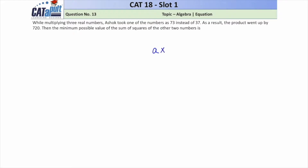We'll start by taking the two unknown numbers as a and b. The third number is given as 37, so the original product is a × b × 37. Instead of 37, Ashok took 73, so the obtained product is a × b × 73. Since the product went up by 720, we have: a·b·73 = a·b·37 + 720.